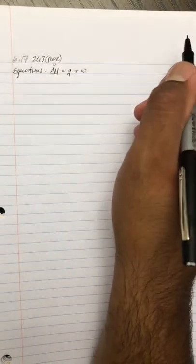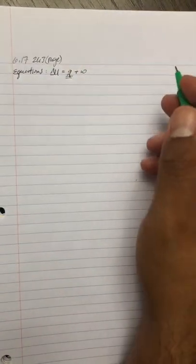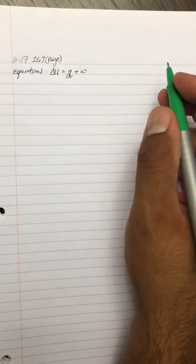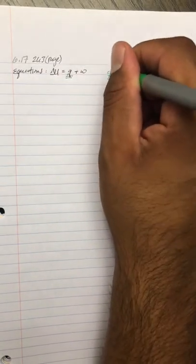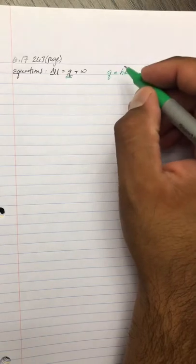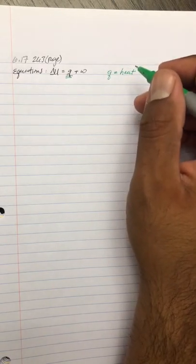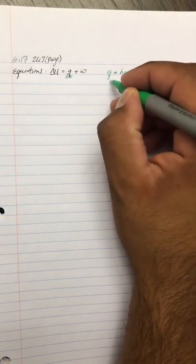Now we have to understand what the problem is telling us. The first thing we're going to denote in green is Q. Remember that Q is equal to heat. In this case, they say that it absorbs 127 joules of heat from the surroundings. So that means we're going to absorb 127 joules of heat from the surroundings.